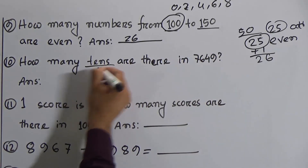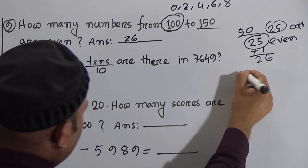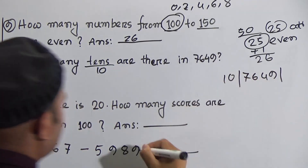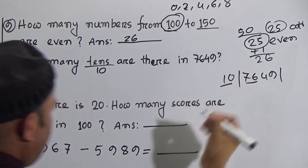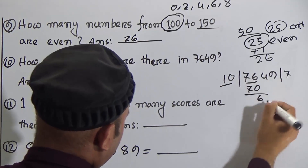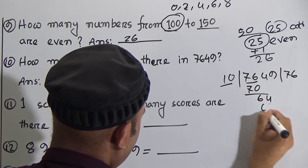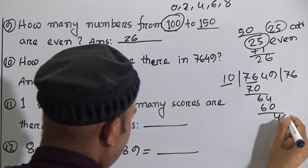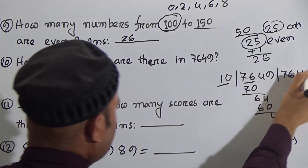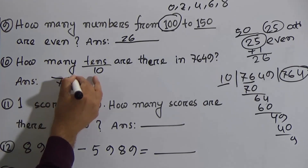Next: how many tens are there in 7,649? You have to divide 7,649 by 10. 10 goes into 76 seven times (70), remainder 6; bring down 4 to get 64, 10 goes 6 times (60), remainder 4; bring down 9 — remainder 9. So there are 764 tens in 7,649.